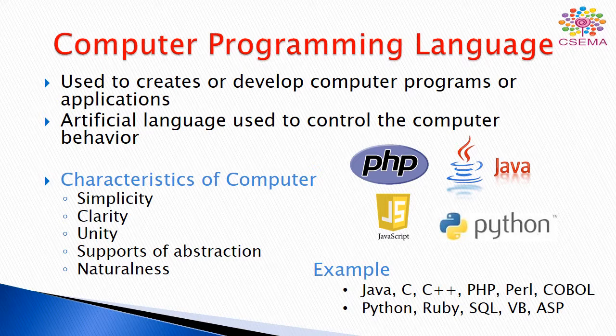Computer programming language is an artificial language that is designed by programmers or humans to interact and communicate with computer systems. Programming languages are basically used to develop or design computer programs, which are the set of rules and commands provided to computer systems to perform any operations. When we communicate with any living things or humans, those languages are called natural languages. When we are trying to communicate with machines, we need an artificial language that is designed by humans, and computer programming language controls the computer's behaviors.